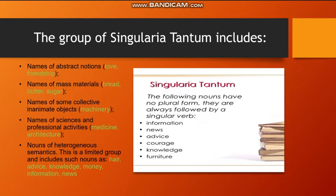The group of singularia tantum includes names of abstract notions, names of mass materials, names of some collective inanimate objects, names of sciences and professional activities, and nouns of heterogeneous semantics. This is a limited group and includes such nouns as hair, advice, knowledge, and others.